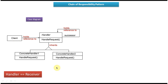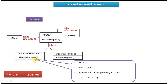The client holds a reference to the Handler. Another name for Handler is receiver — the Handler is nothing but a receiver. When a request comes to a ConcreteHandler, it will check whether it can handle the request or not. If it can handle, it will handle the request, then check if further processing is needed. If it is needed, it will pass the request to the next handler in the chain. If it cannot handle, it will also pass the request to the next handler in the chain.